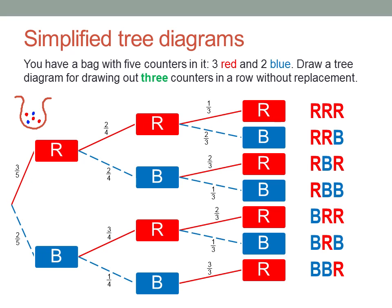It's important here to note that with a simplified tree diagram like this, you can't simply count the outcomes on the right-hand side of the tree. Although there are seven possible outcomes here, they are not all equally likely.